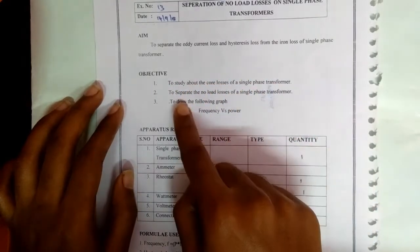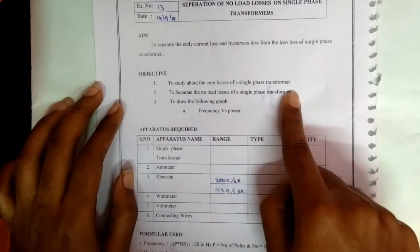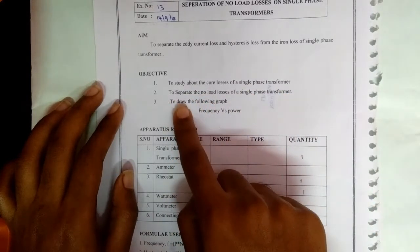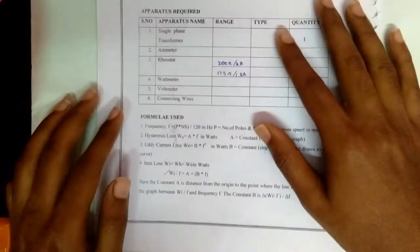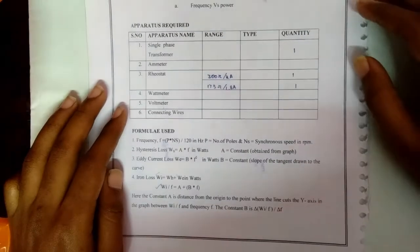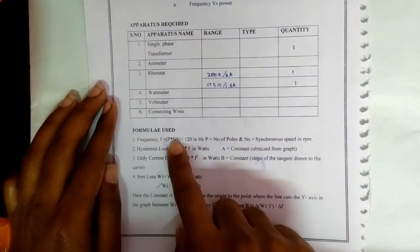And to separate the no-load losses of a single phase transformer, and finally to draw a graph between frequency and power. The formula used for this experiment is frequency is equal to p into ns by 120. So the p is equal to number of poles and ns is the synchronous speed in rpm.